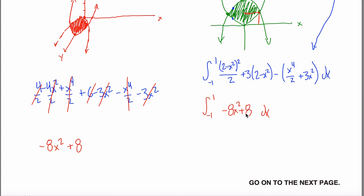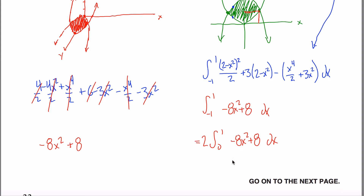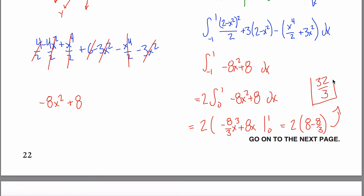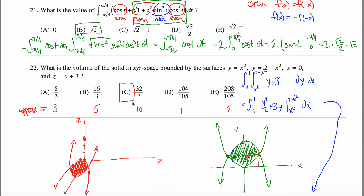You might notice this is an even function, so you can write it as 2 times the integral from 0 to 1 of negative 8x² plus 8 dx. The anti-derivative is negative 8/3 x³ plus 8x, evaluated from 0 to 1. That gives 2 times (8 minus 8/3). Now 8 is 24/3, so 24/3 minus 8/3 is 16/3. Times 2 gives 32/3, which is about 10 — matching what we ballparked from the get-go.